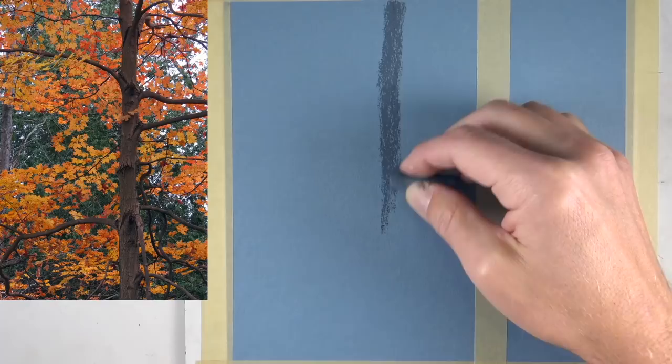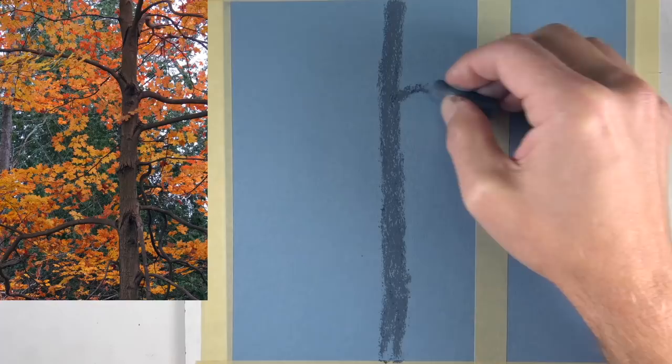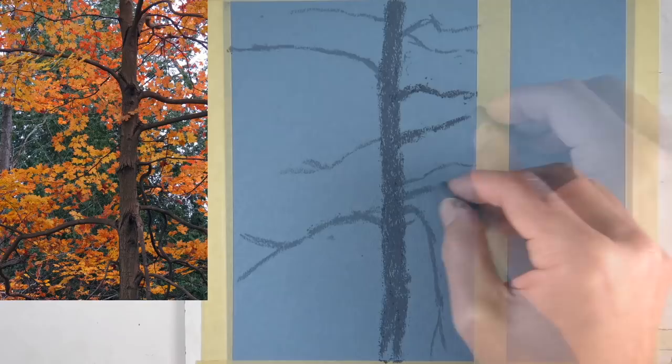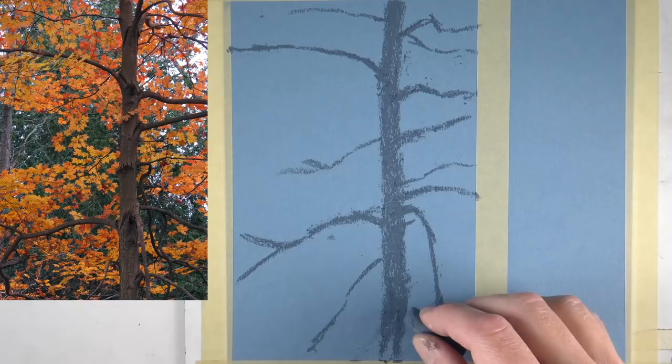We're going to use a looser approach for this drawing, so we're not going to get too wrapped up in making sure that our marks are perfect. We're just going to work quickly and loosely here as we continue to draw in some of the additional branches. Now in the background we'll just start putting some interesting colors down.